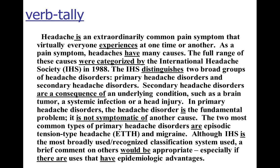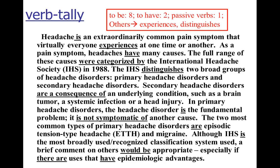One technique is what I call a verb tally. I've underlined all the verbs here. When you count up the verbs in this paragraph, we have eight to-be verbs — is, are, was, were. As I mentioned last week, to-be verbs are weak. You can use them sometimes, but you probably don't want to use them too much because they're boring. There are two to-have verbs, also boring. There's a passive verb — 'were categorized by.' And then there are two slightly more lively verbs: 'experiences' and 'distinguishes.' In terms of verbs, we're not doing great, so we're going to change that.